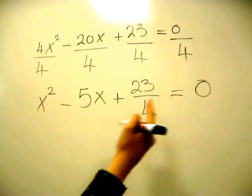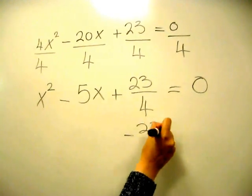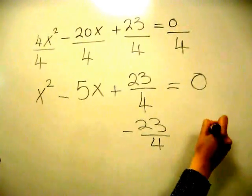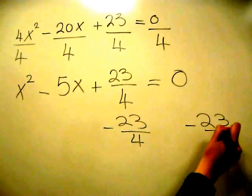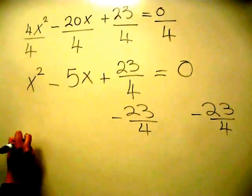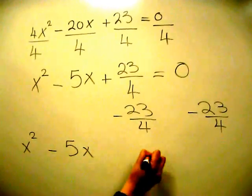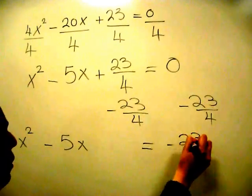So then we're going to move the constant out. I'm going to subtract 23 over 4 from each side. That would get me x squared minus 5x equals negative 23 over 4.